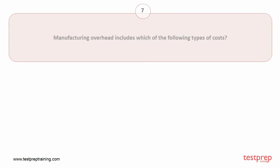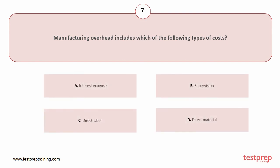Question number seven: Manufacturing overhead includes which of the following types of costs? Your options are: A) interest expense, B) supervision, C) direct labor, D) direct material. The correct answer is option B.